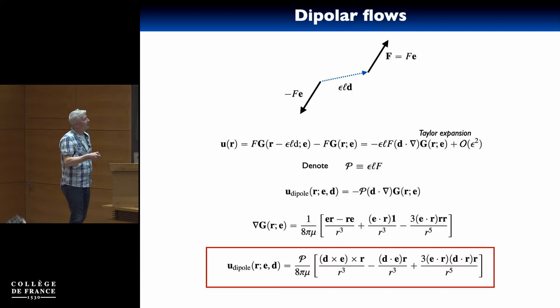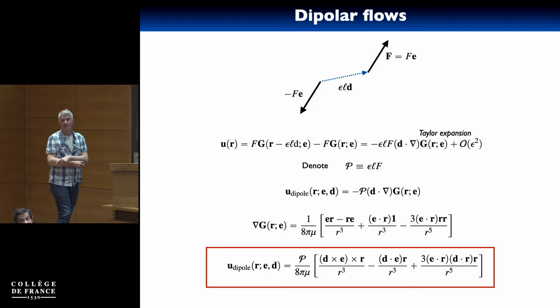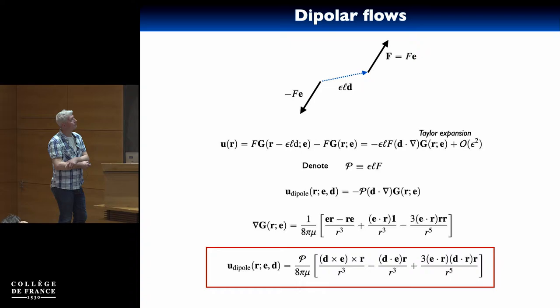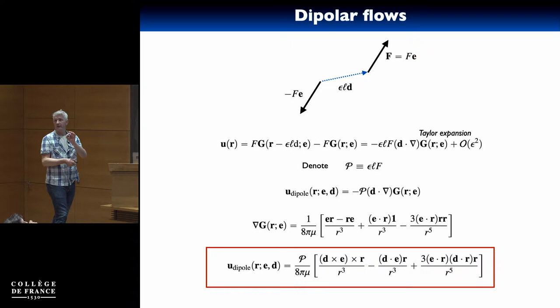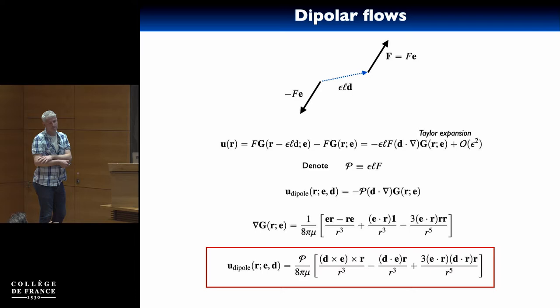The dipole depends on vectors e and d: e is the direction of the force, and d is the direction of the dipole. For this term much larger than that term, you need to be far from the singularities — much further than the distance ε·l between the two singularities. [Student question: should d and e be parallel to avoid injecting torque into the field?] Yes, we'll talk about this in a minute.